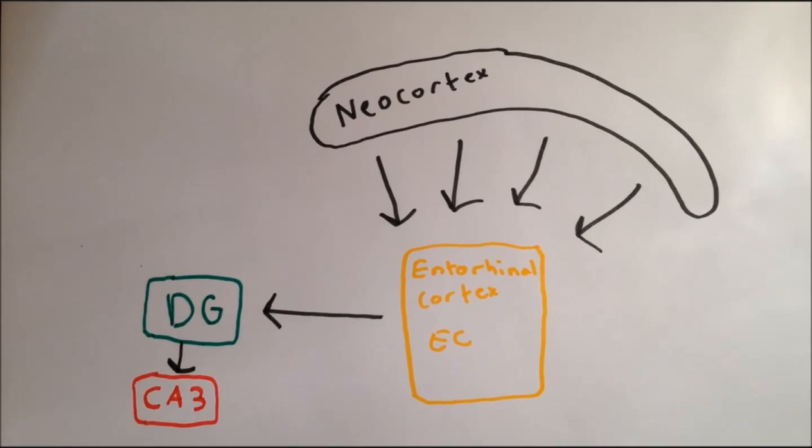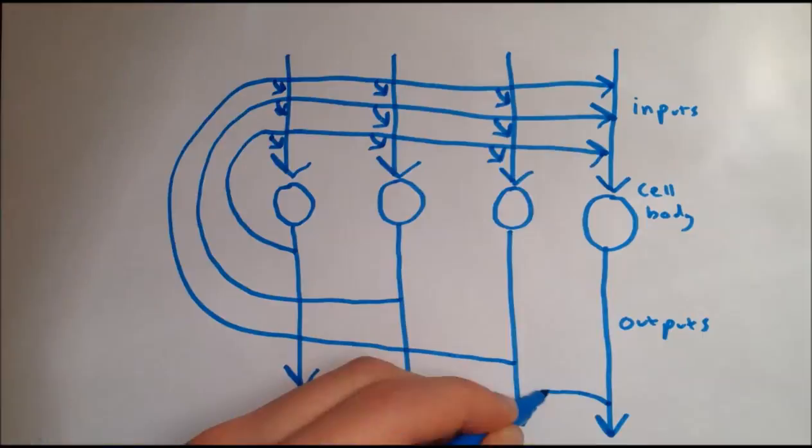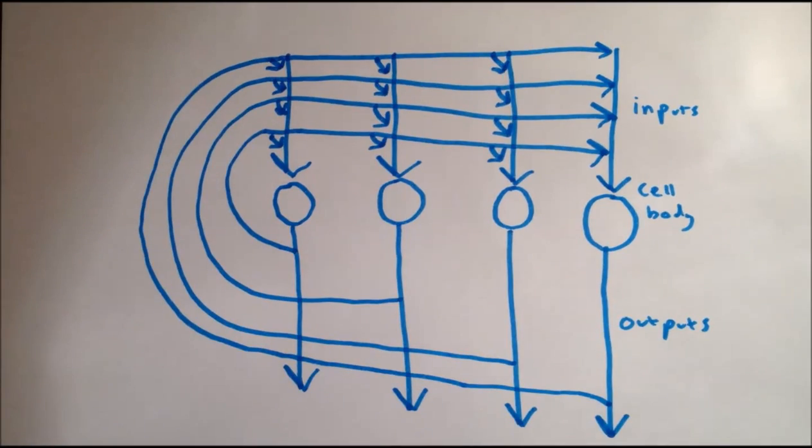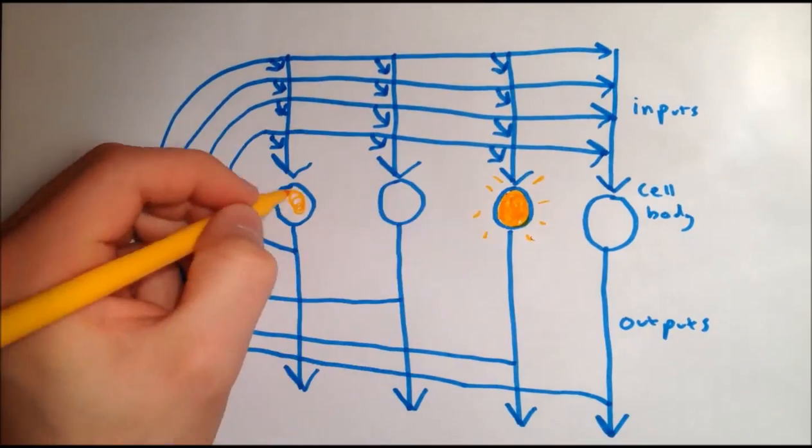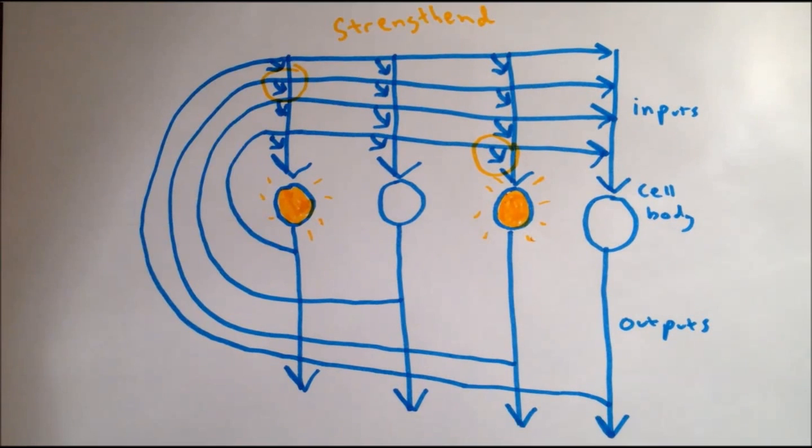The CA3 area is thought to act as an auto-associator, due to its dense reciprocal connections. Each pattern of neocortex activity results in a unique input pattern, activating a unique subpopulation of neurons.